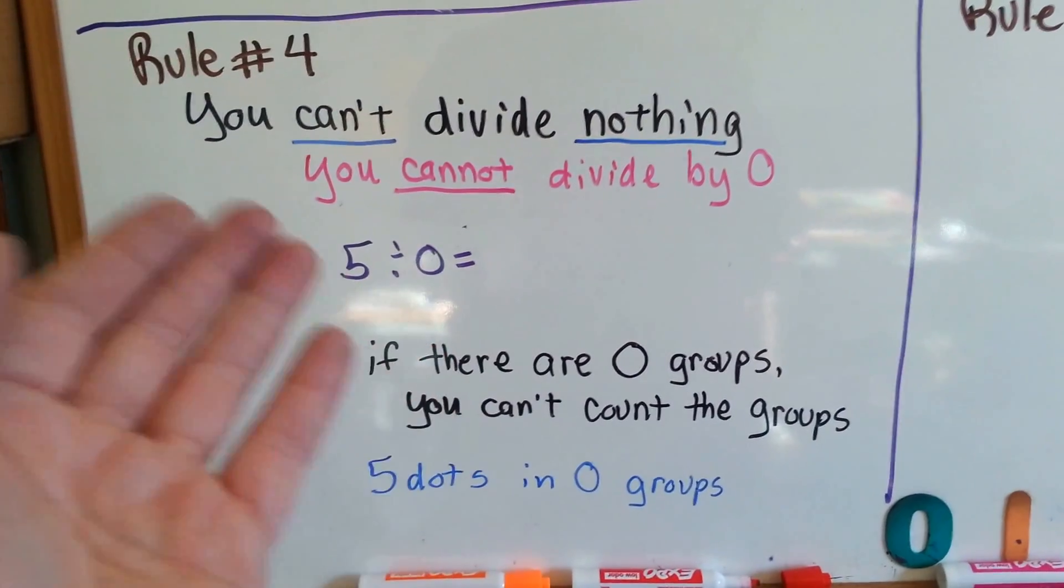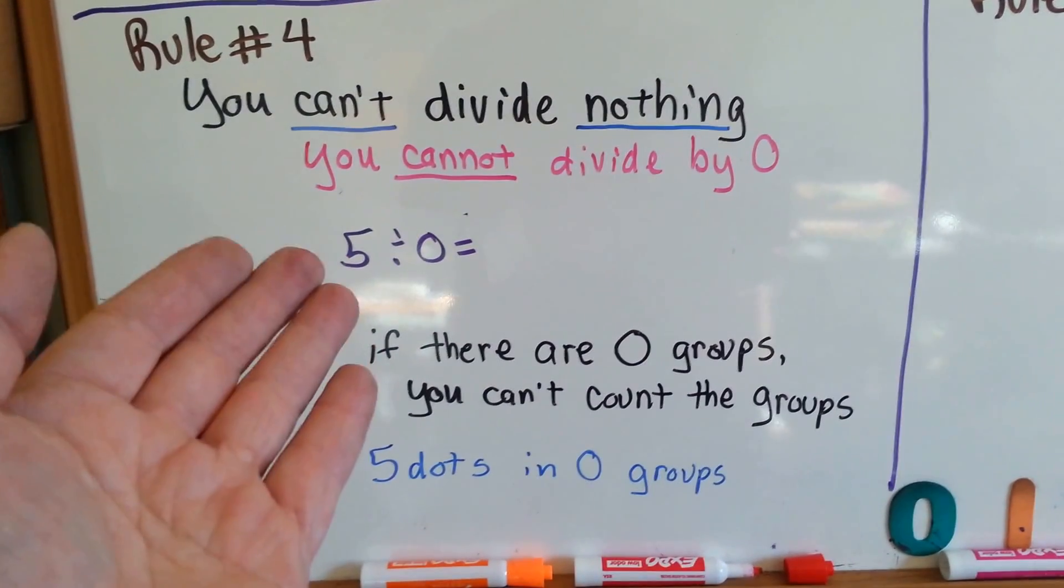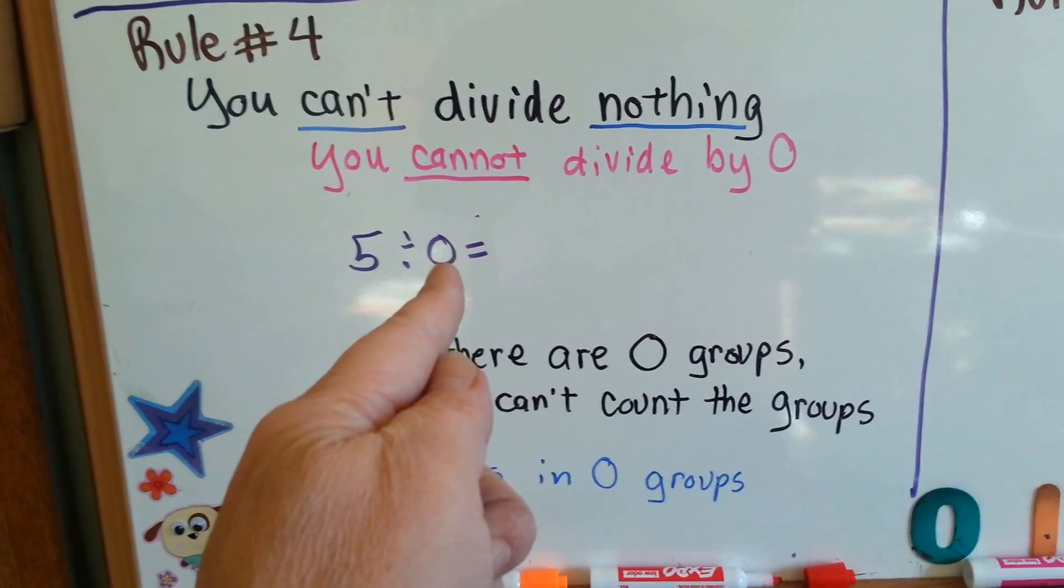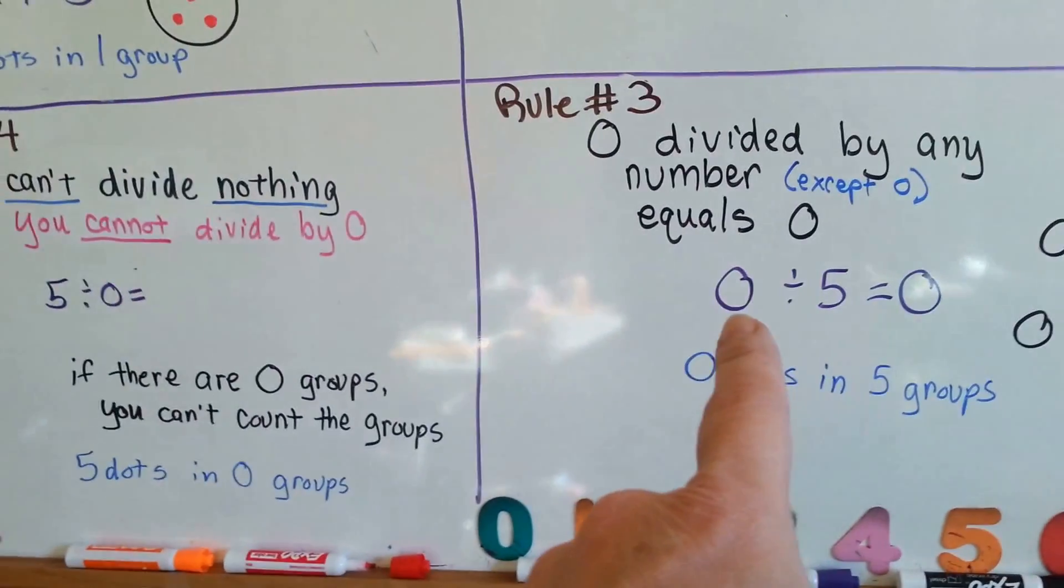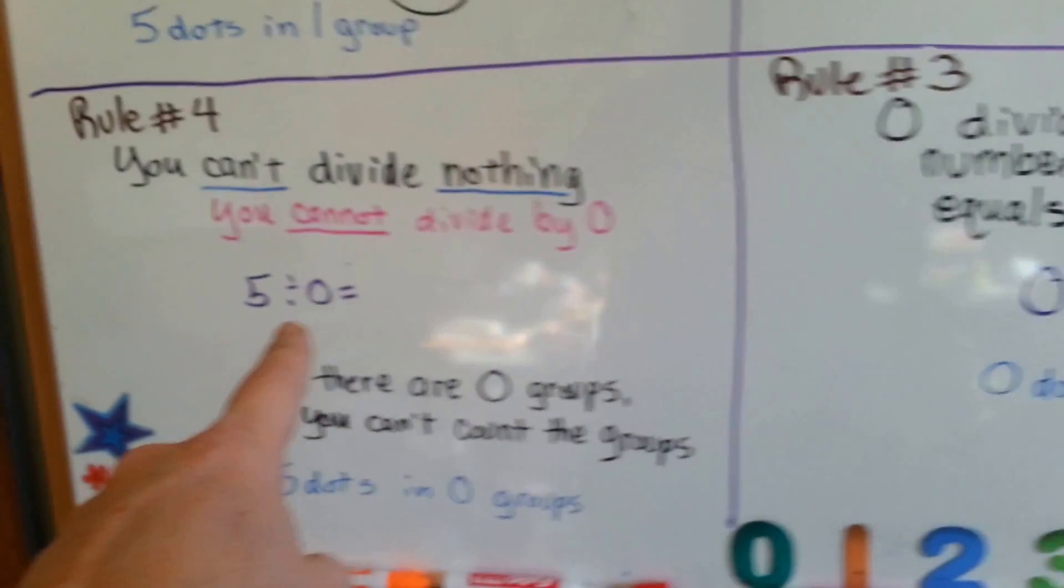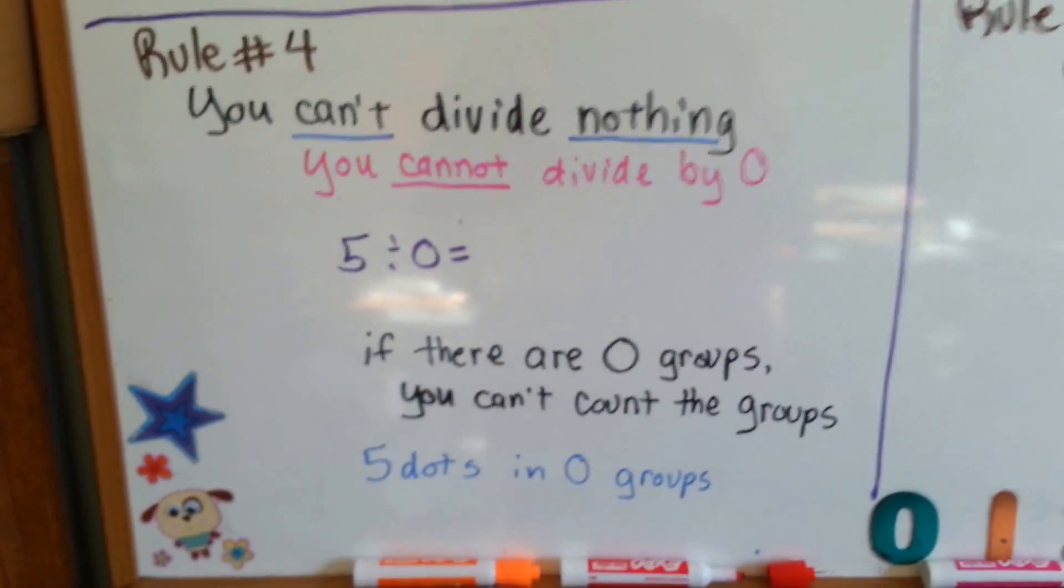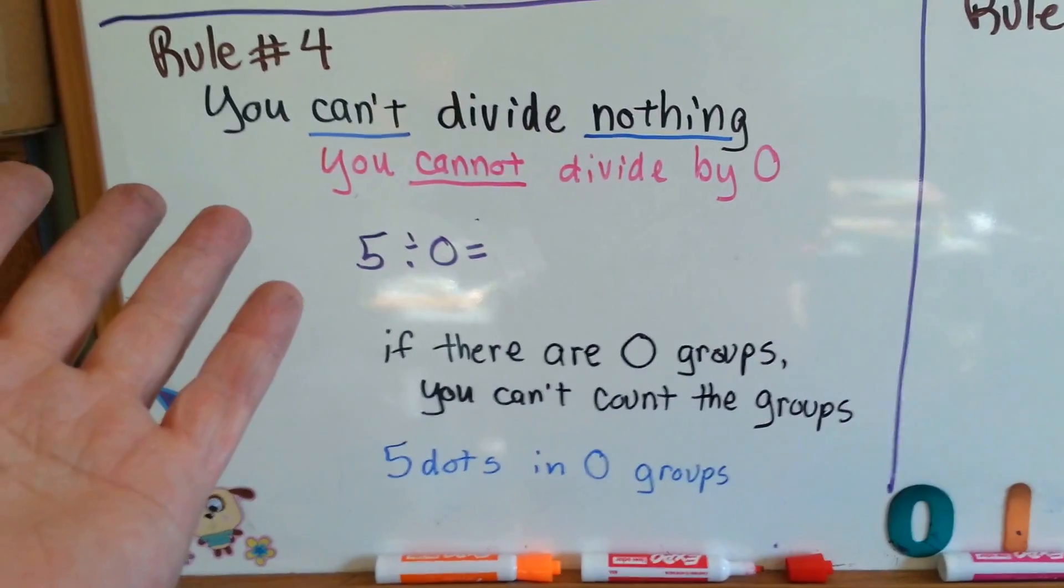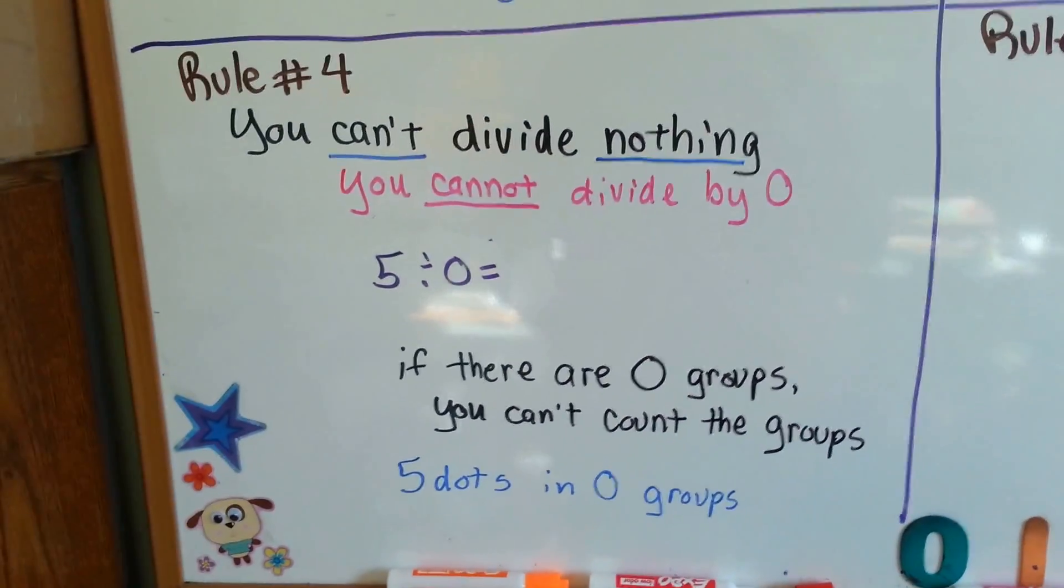So you cannot divide by 0. You cannot have 0 in this space, in the second spot. You can have it in the first spot, but you can't have it in this spot. It can't be done, okay? That means you have 5 dots and no groups, so I have nothing to circle. There's no groups, okay?